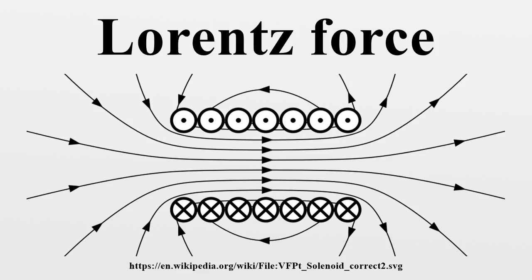Trajectories of particles due to the Lorentz force: In many cases of practical interest, the motion in a magnetic field of an electrically charged particle can be treated as the superposition of a relatively fast circular motion around a point called the guiding center, and a relatively slow drift of this point. The drift speeds may differ for various species depending on their charged states, masses, or temperatures, possibly resulting in electric currents or chemical separation.